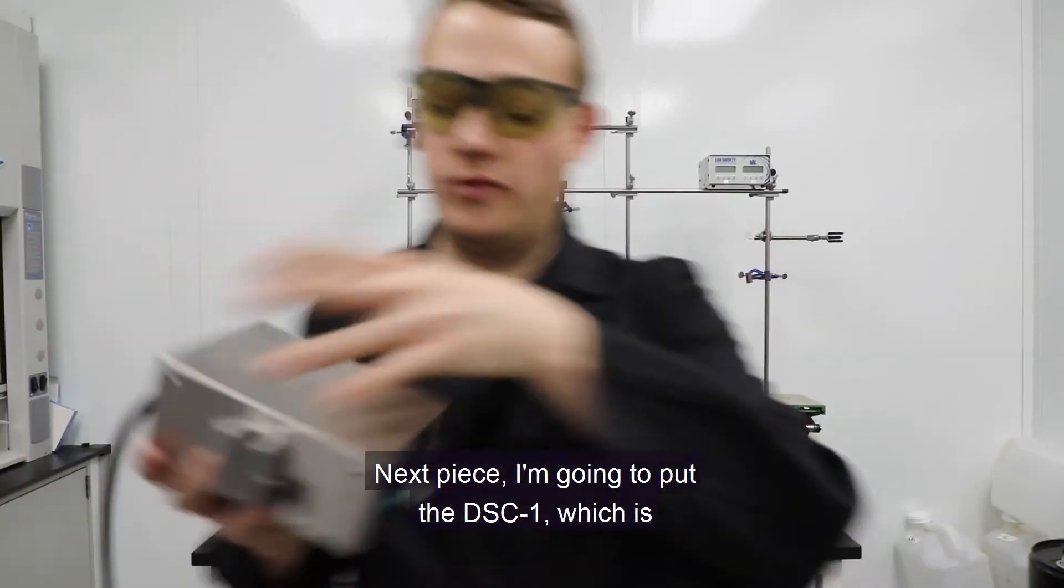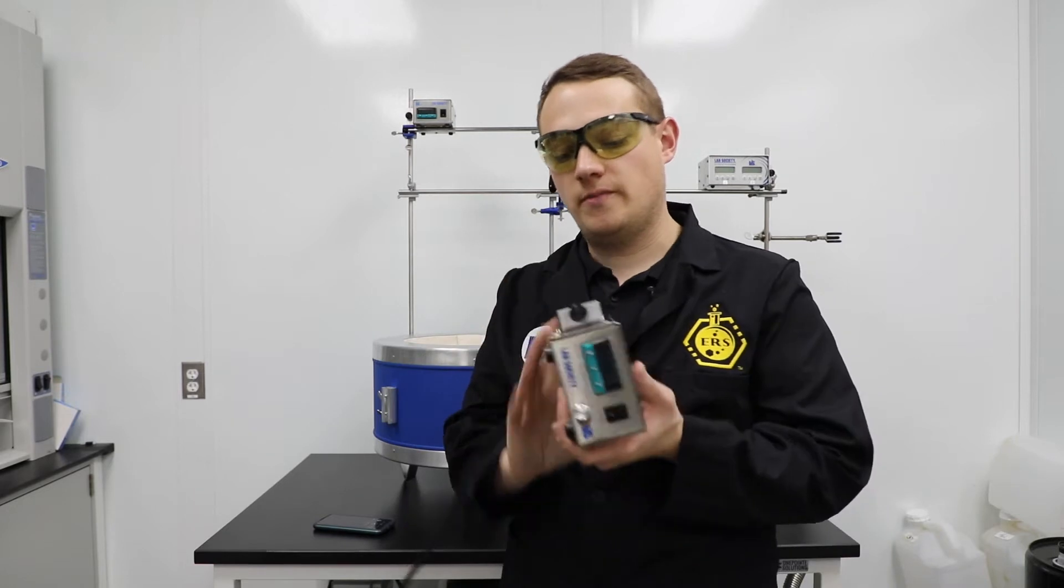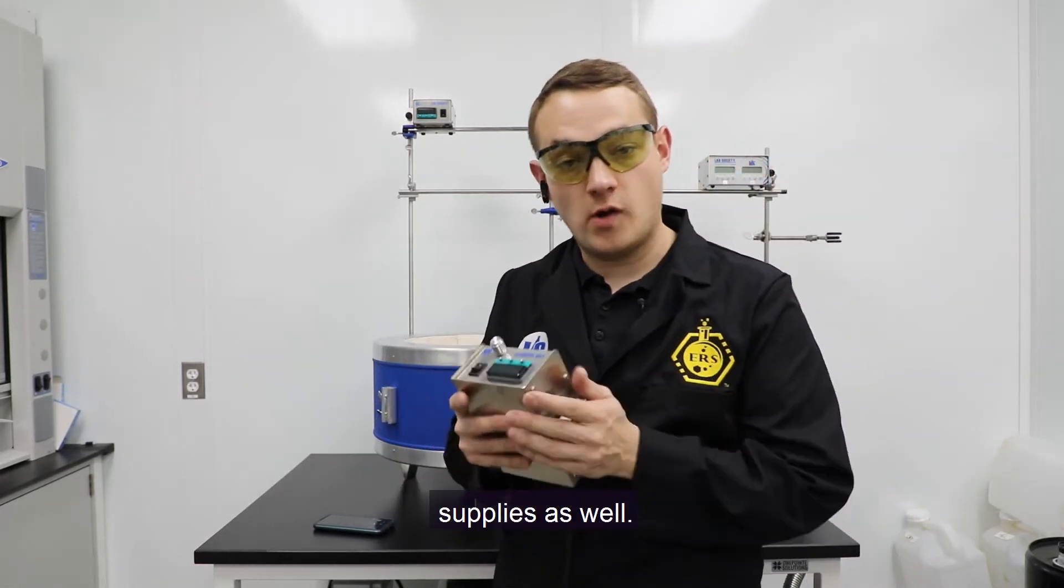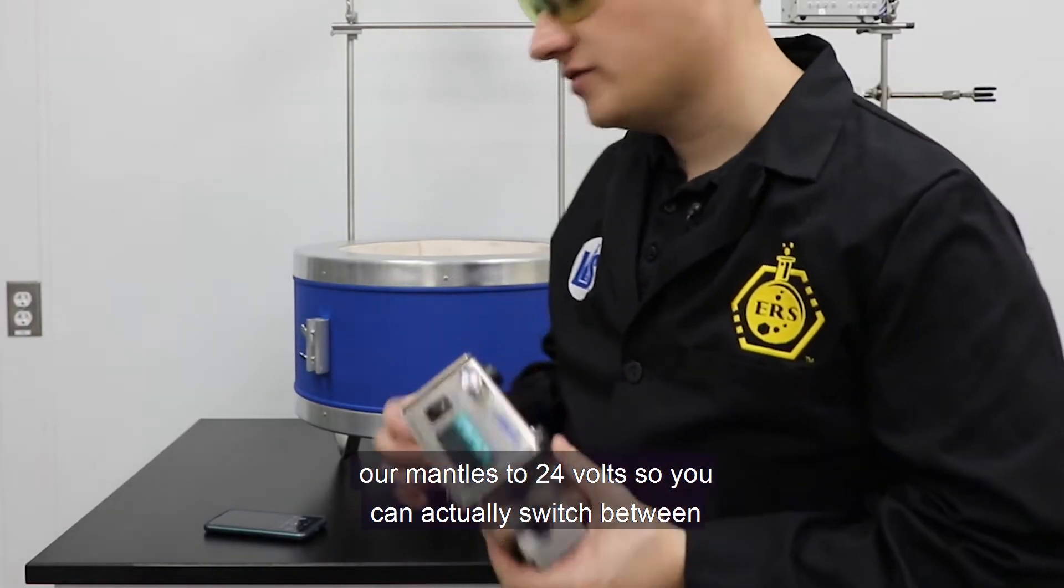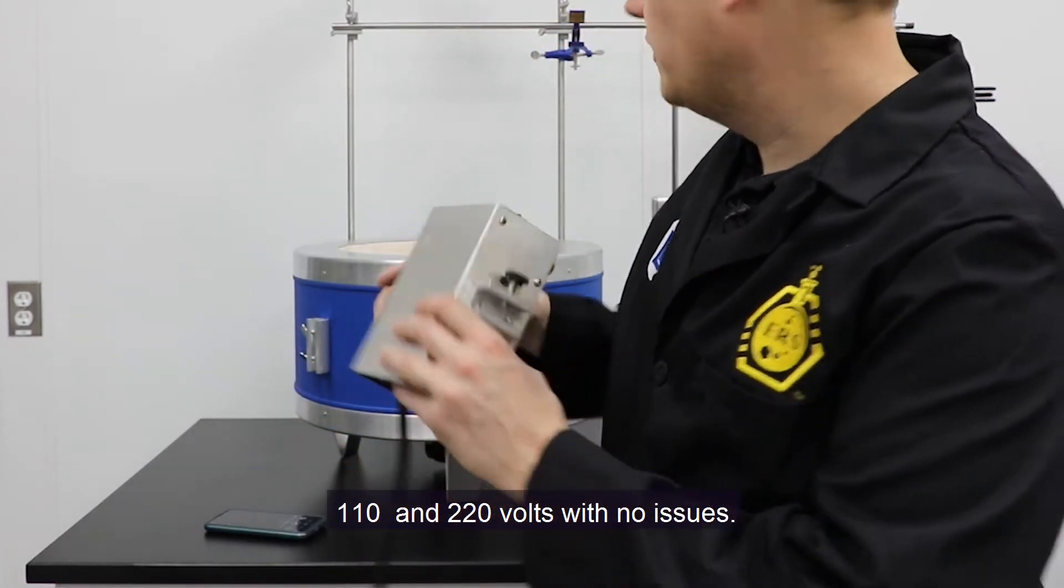Next piece, I'm going to put the DSC-1, which is our digital stir controller. We recently switched these over to external power supplies as well, also for UL compliance, and switched all of our motors on our mantles to 24 volts, so you can actually switch between 110 and 220 volts with no issues.